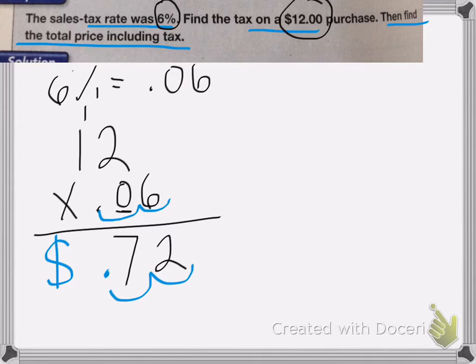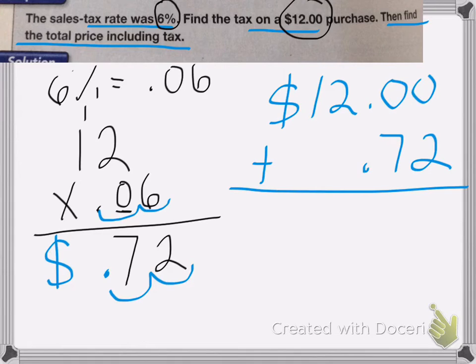So the sales tax is $0.72. Now what I need to do is add that $0.72 to the original purchase amount. Okay, so I start with $12.